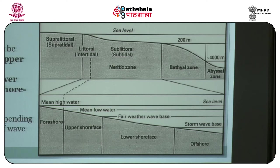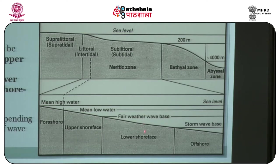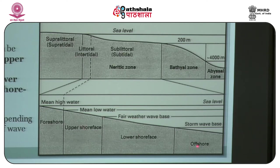The upper shoreface is characterized by wave features and wave-generated current features. The lower shoreface receives mostly silty material deposited from suspension fallout with intervention of storms. Only storm waves can penetrate here; no fair weather waves can penetrate to this depth. There are intercalations of sandstone beds showing hummocky and swaly structures produced by storms, but hummocks usually get decapped and are not preserved here — mainly swaly cross-strata are represented. The offshore region is chiefly dominated by suspension fallouts, and no sandstone-bearing wave features are present there.